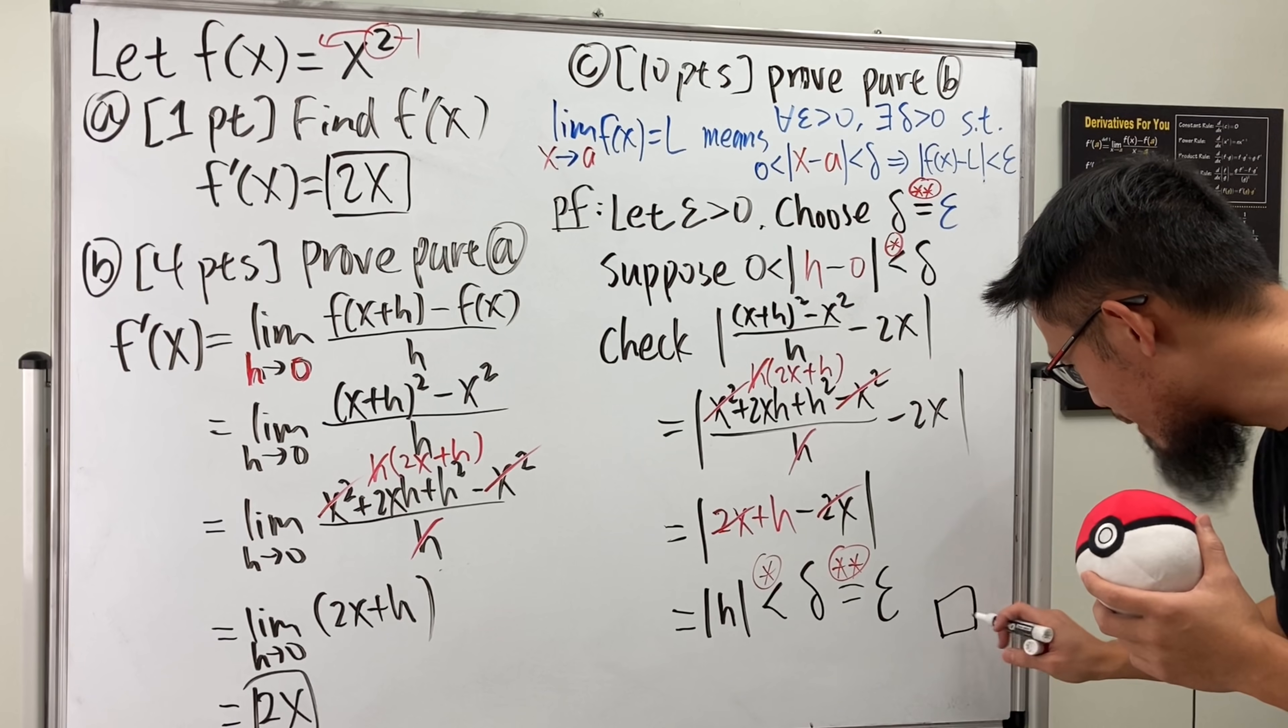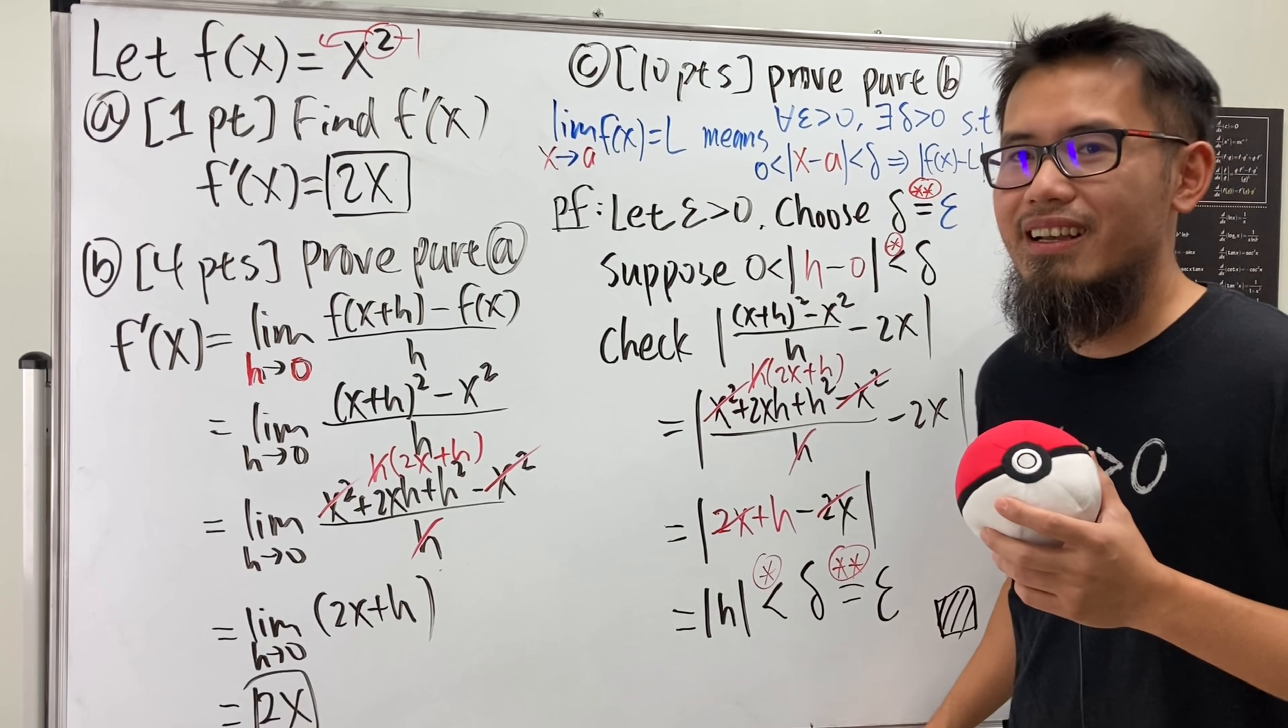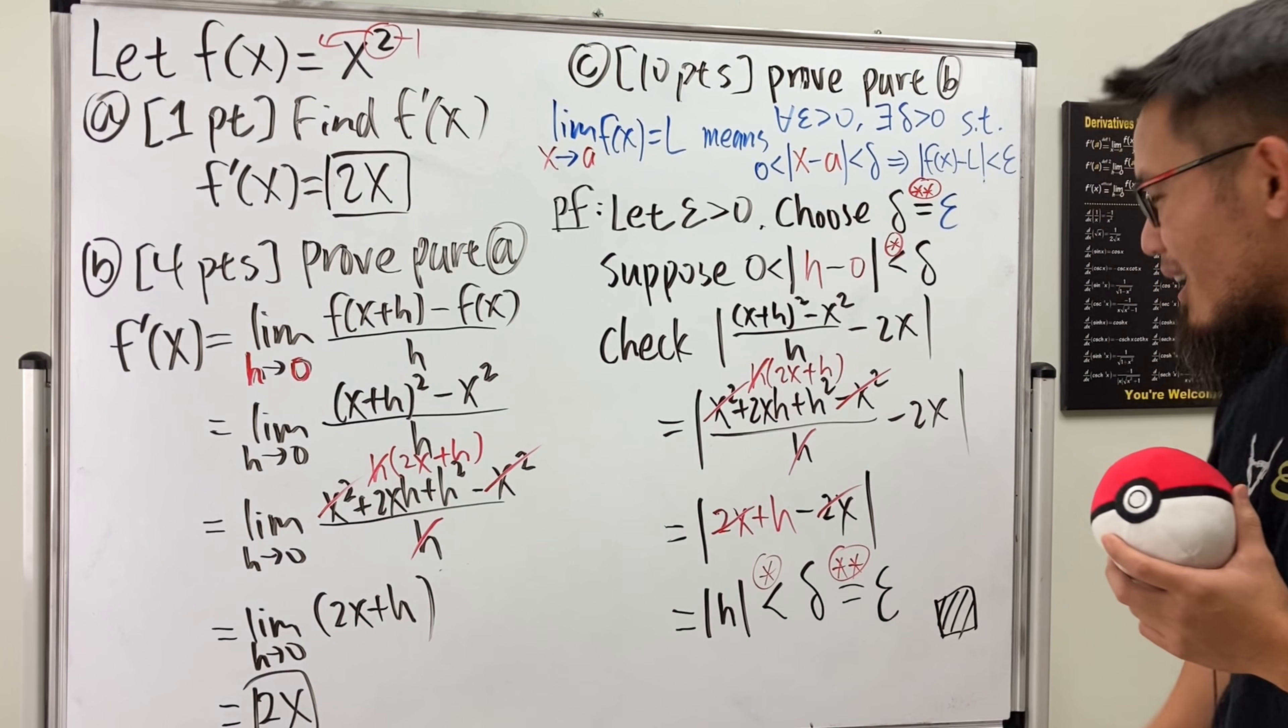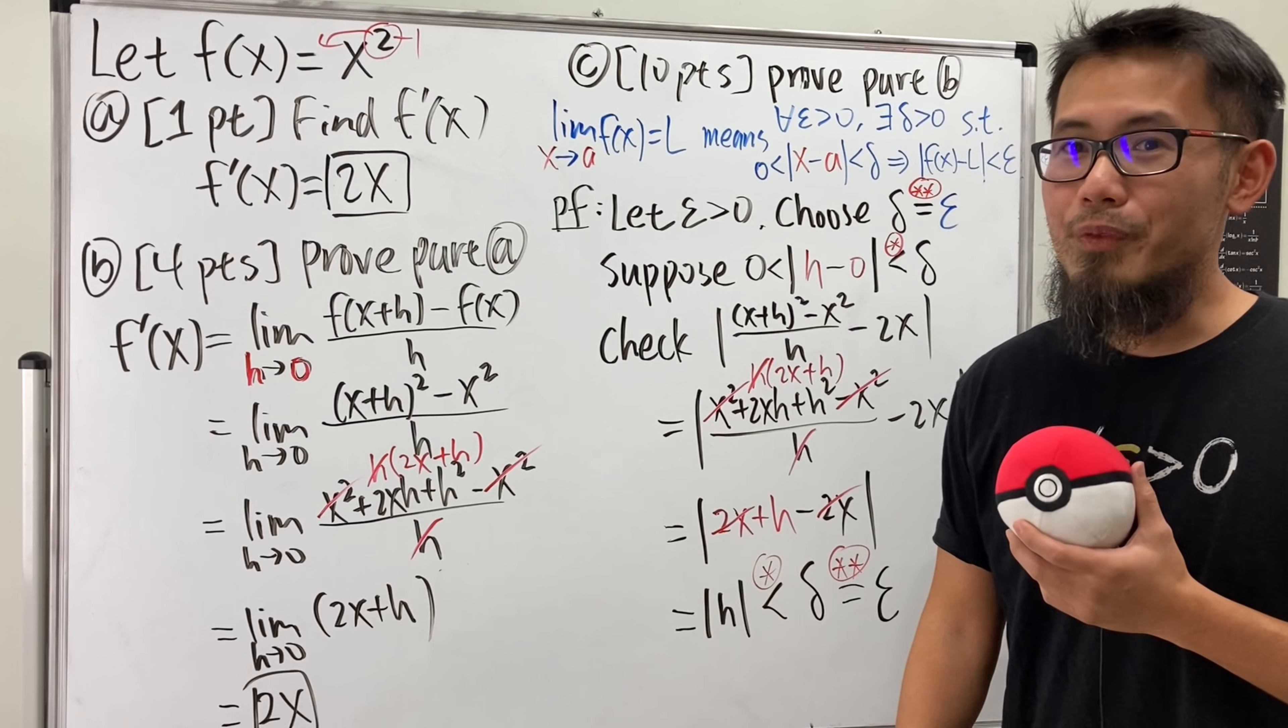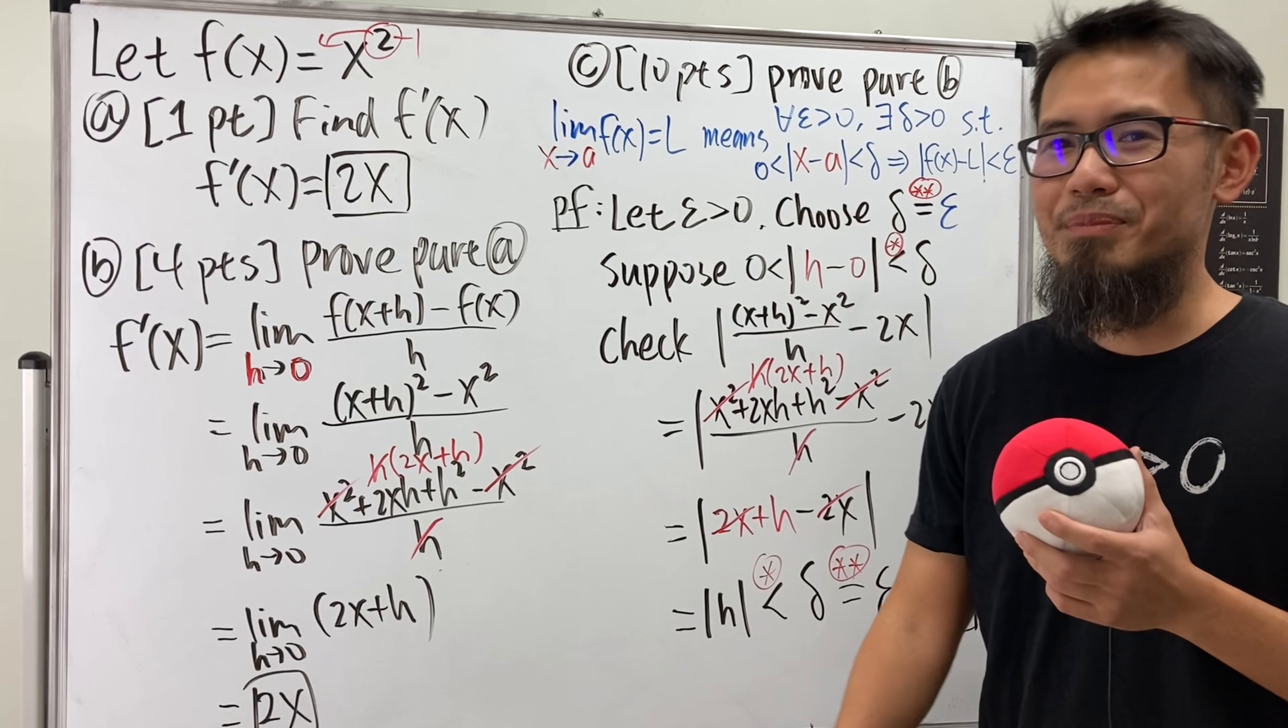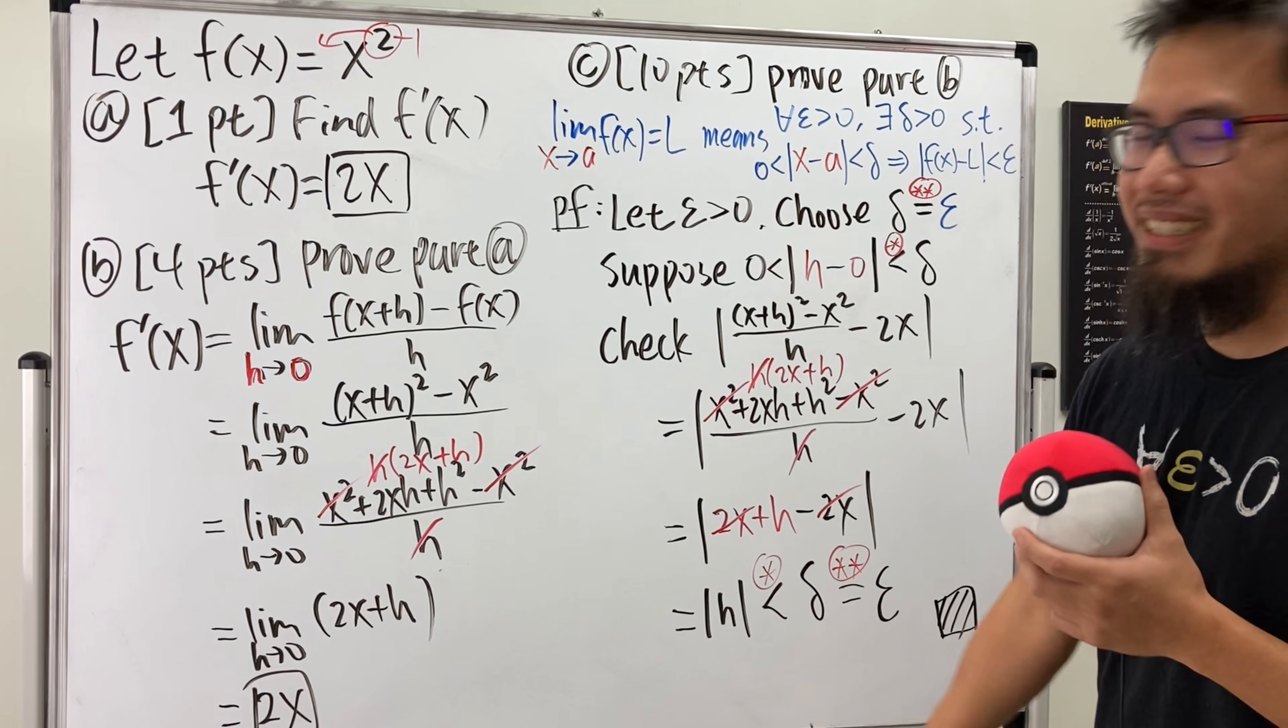All right. So, what do you think about this? Total 15 points. How many points do you think that a student can get out of this? Anyway, that's it.